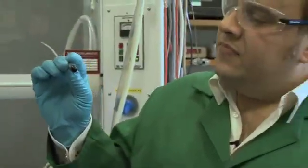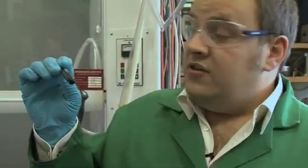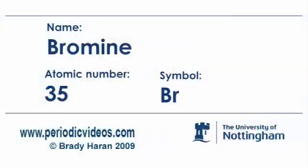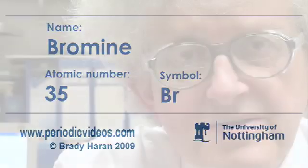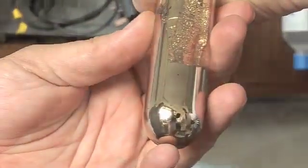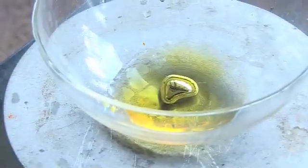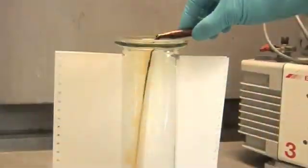So today we're going to look at bromine. This is bromine — it's a small sample, about two or three grams. Bromine is a red liquid. There are not many elements that are actually liquid: cesium, mercury, gallium, and bromine.